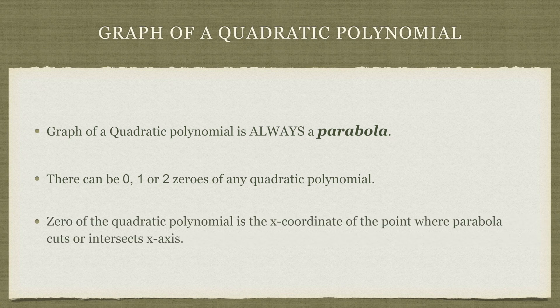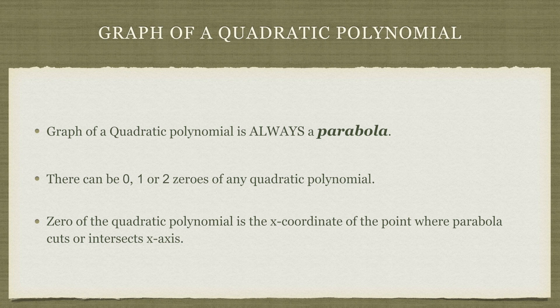And finally, the zero of a quadratic polynomial, if there is one, is represented by the x-coordinate of the point where our parabola intersects the x-axis.